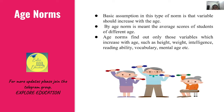Basic assumption in this type of norm is that the variable should increase with age — जैसे height, weight, intelligence, reading ability, vocabulary, mental age उम्र के साथ बढ़ना चाहिए। जैसे height chart में age के हिसाब से boy और girl के age norms होते हैं, उसी से हम compare कर लेते हैं कि normal range में हैं या नहीं।